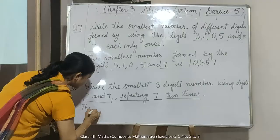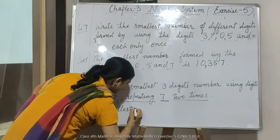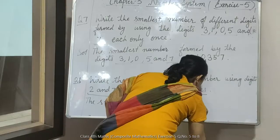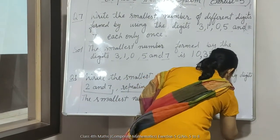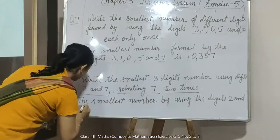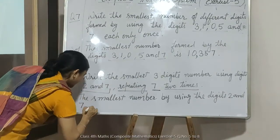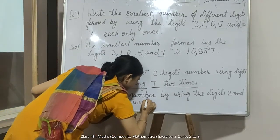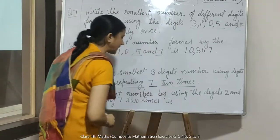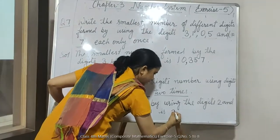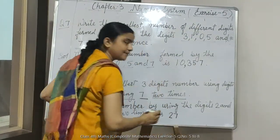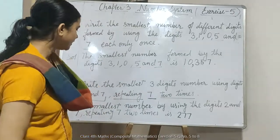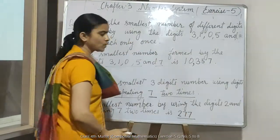तो फिर लिखेंगे: the smallest number by using the digits 2 and 7, repeating 7 two times। आप क्या करेंगे — 2 सबसे छोटा number है, उसके बाद 7, और 7 को repeat कर सकते हैं, तो एक और बार 7 लेंगे। तो इस तरीके से हमारा 3-digit number होगा 277।